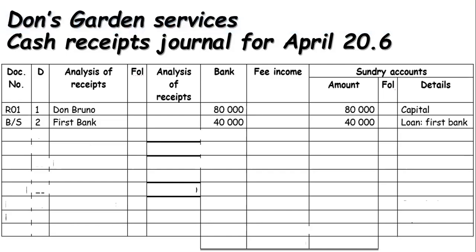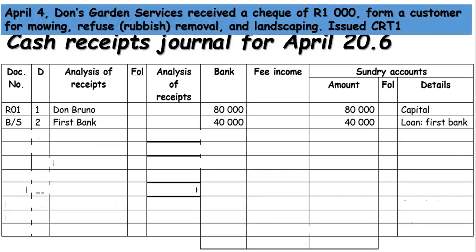The next transaction on the 4th is also on page 54. He offered a service and charged 1,000 rand for mowing, refuse removal, and landscaping. He issued source document CRT — cash register tape number one. The date is the 4th, from a customer for service fees. The money amounts to 1,000 rand. You see there is a bold underline showing the money has been deposited into the bank, and this amount falls under fee income since it is the core business.